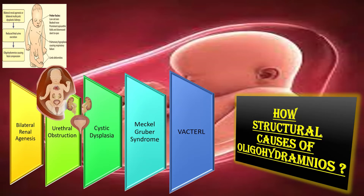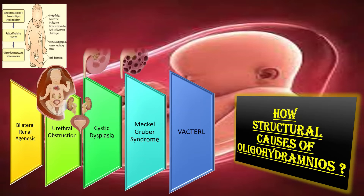In urethral obstruction, the urethra is the tube that allows the bladder to empty into the amniotic space, maintaining normal amniotic fluid level around the baby. Over time, this blockage can cause permanent kidney damage, and when urine can no longer be drained, the amniotic fluid tends to decrease. In cystic dysplasia, the same mechanism as in renal agenesis is responsible for oligohydramnios.